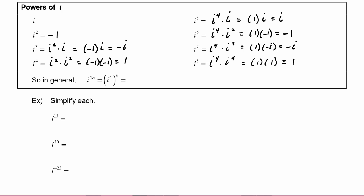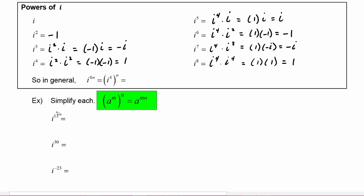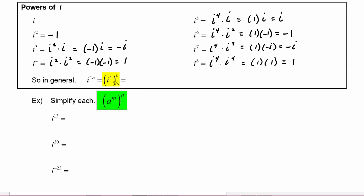The reason this happens is because i to the fourth is such a powerful tool and can be replaced with 1. Remember, when you have a power to a power, you multiply the exponents. So when we have i to the 4n, that means i to the fourth raised to the n power. That i to the fourth can be replaced with 1, and we know that 1 to any power is going to be 1. So we can use that as a tool to simplify powers of i.